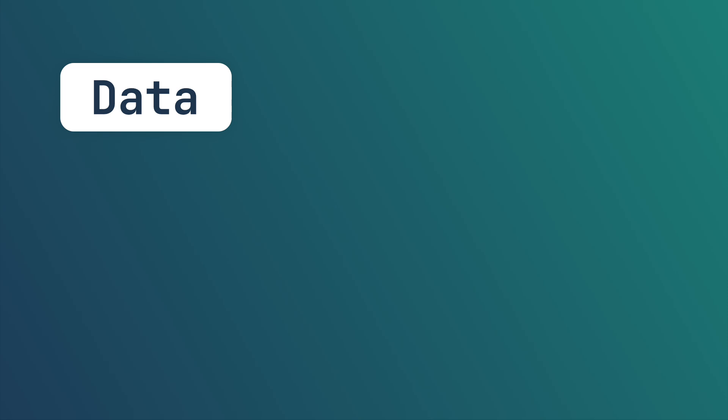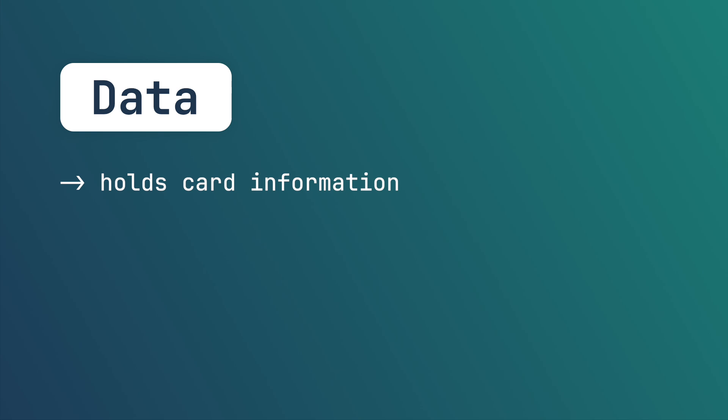The data contains all the information for our cards, like the name and the image, but also effects and stats. It contains all information needed to create a card and will be used to create our in-game card objects.